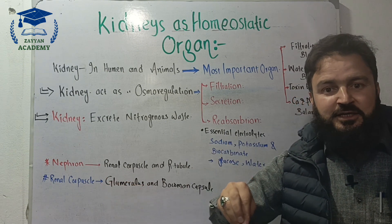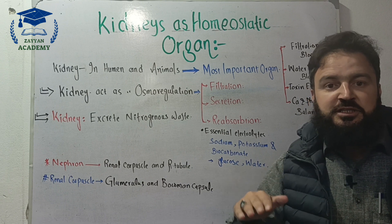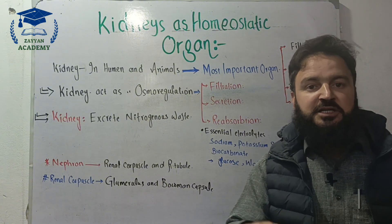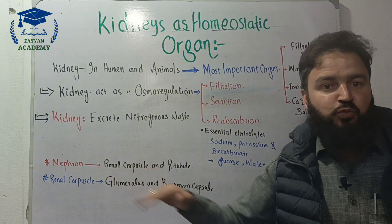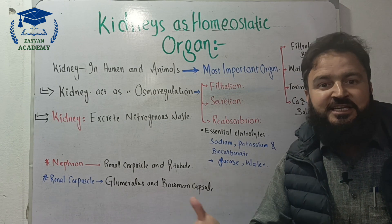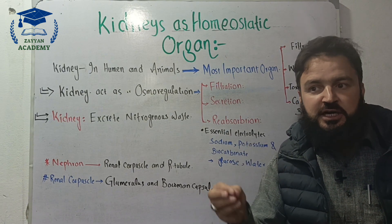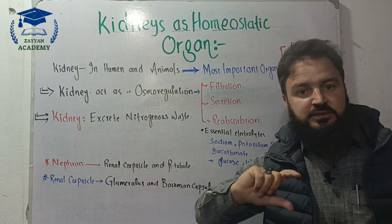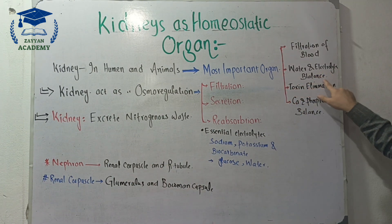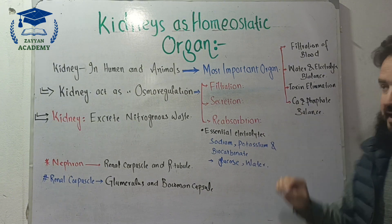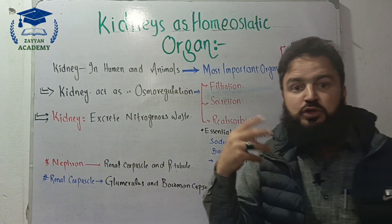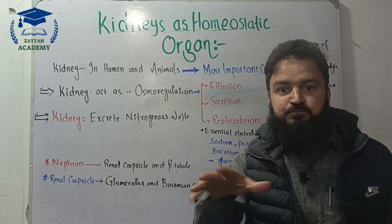Under normal conditions, the amount of blood excreted from the body is regulated so that life is maintained within the body. Water and electrolyte balance is very important. The kidney maintains the regulation of water amount and electrolyte levels in the body.